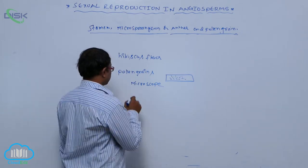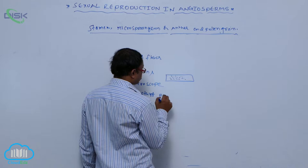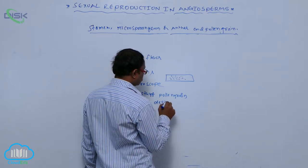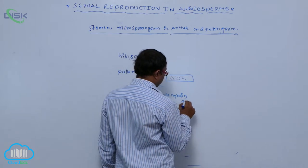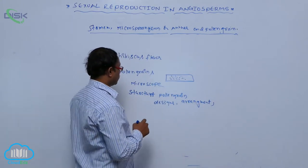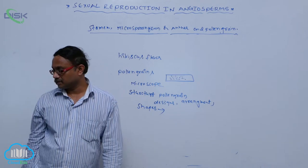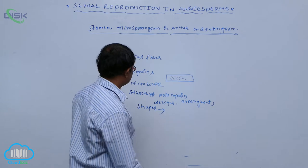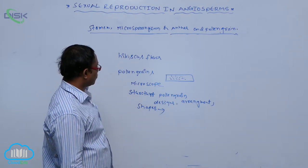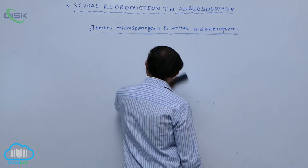We observe different structures of pollen grains — the designs, arrangement, and shapes. You observe different types of pollen grains: their structure, design, arrangement, and shapes when observed with the help of a microscope. After that, we will discuss the structure of pollen grain.